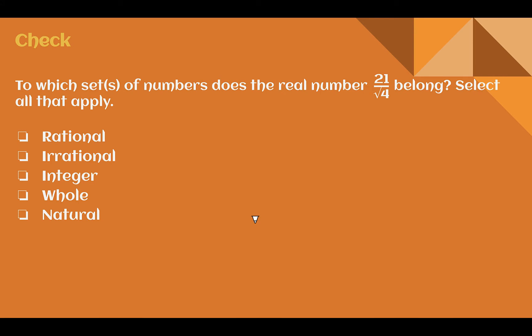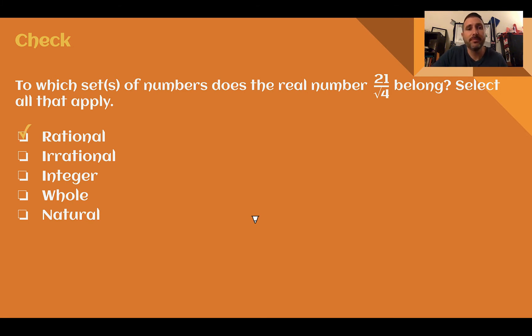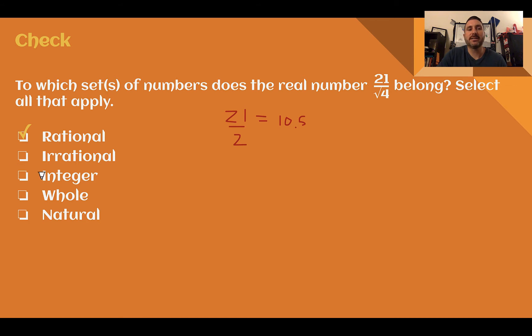Check your understanding: To which sets does 21 over the square root of 4 belong? The square root of 4 is 2, so this is the same as 21 over 2. That's rational — expressed as a fraction. 21 divided by 2 is 10.5, a terminating decimal, so rational. But it's not an integer, not a whole number, not natural. Because it's rational, it cannot also be irrational since those are opposites.